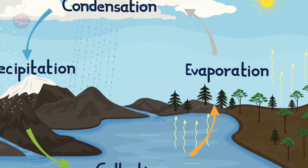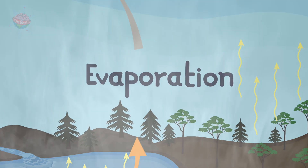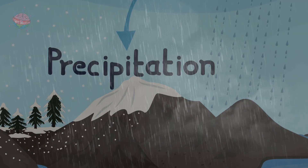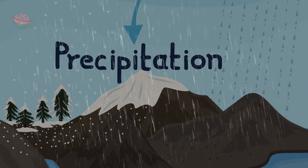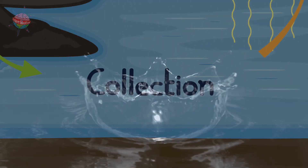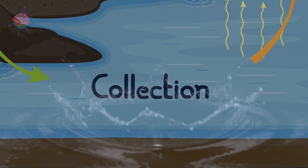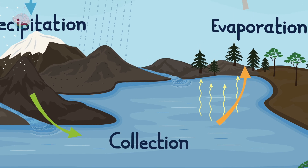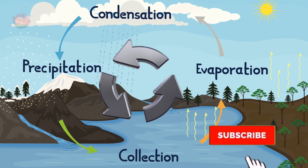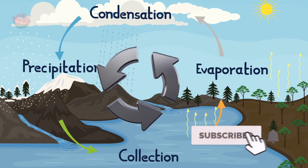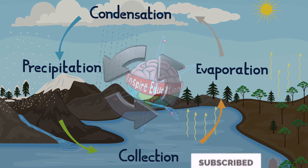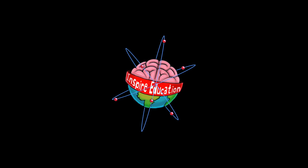Then the whole process of evaporation, condensation, precipitation and collection begins again. That is why it is called the water cycle.